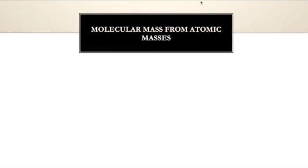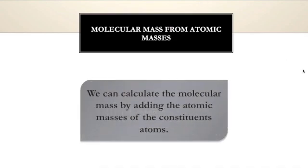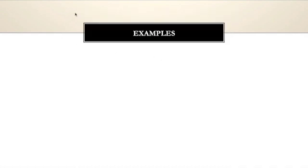There is another way of calculating the molecular mass: by adding the atomic masses of the constituent atoms. Let's see some examples and understand how we can calculate the molecular mass. The first example is carbon dioxide (CO2), which contains carbon and oxygen as constituent atoms.